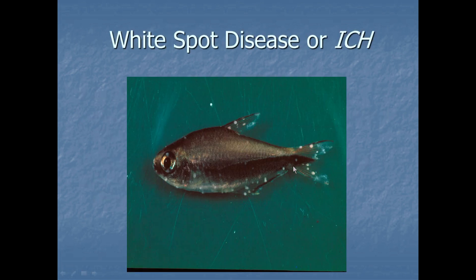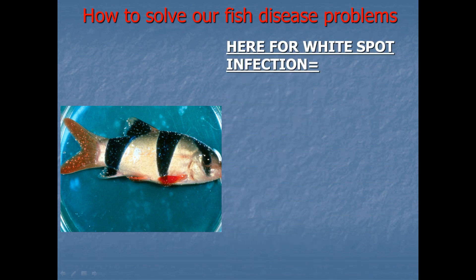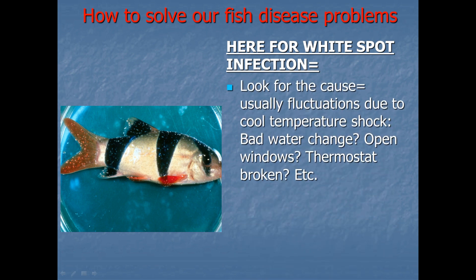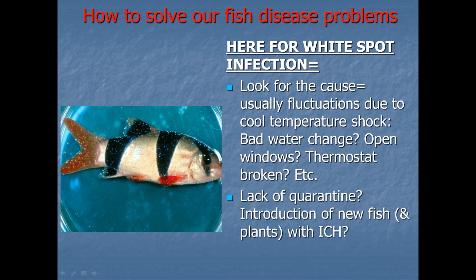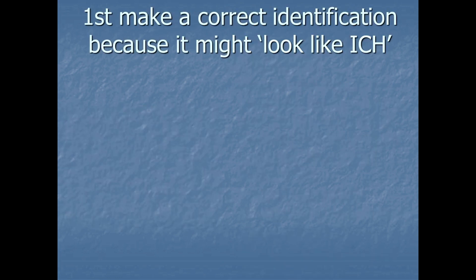White spot disease or ick you can clearly see here on the skin and the fins — on this black emperor tetra and on the clown loach. If you have a problem with ick, you have to understand and look for the cause. Usually it is fluctuations due to cool temperature shock, bad water changes, open windows, broken thermostat, lack of carotene, introduction of new fish, new plants which carry white spots or ick, stress, bad food or poor feeding practice — all causes that white spot infection can appear.